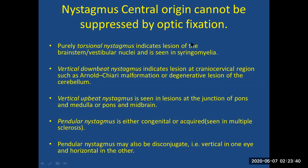Pendular nystagmus is seen in congenital cases or in acquired cases such as multiple sclerosis. Pendular nystagmus can also be disconjugate — vertical in one eye and horizontal in another. These are all signs of central lesions and usually warrant referral to a neurologist.